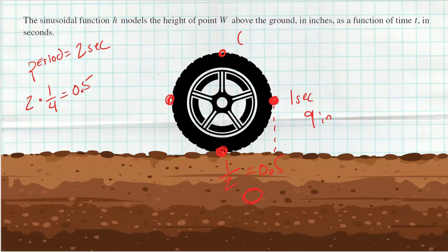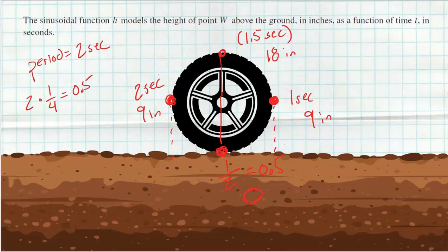Then at another quarter — another half second — we're at 1.5 seconds, which is the maximum of 18 inches above the ground. That's one radius of nine plus another radius of nine. At three quarters, another half second brings us to two full seconds, and we're back to nine inches above the ground. After one more quarter rotation — half a second — we're at two and a half seconds, back at ground level, zero inches.